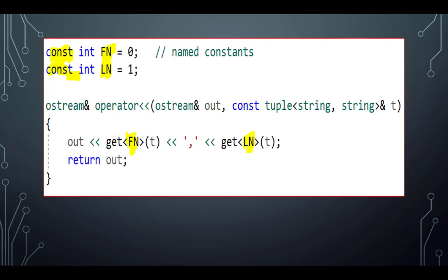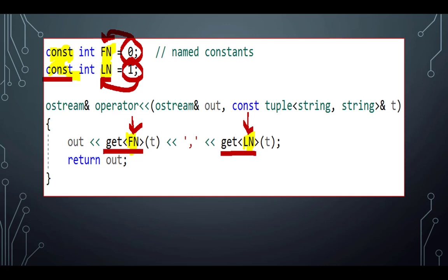I don't like using the raw numbers zero and one, because numbers mean nothing — six could mean six days, six dollars, or six cents. So I'm going to take that zero and give it meaningful initials: 'fn' for first name. I'll take the number one and give it meaningful initials for last name, making both constants — this only works with constants. Now I can say get<fn>(name) instead of get<0>(name), and think 'first name' instead of zero.